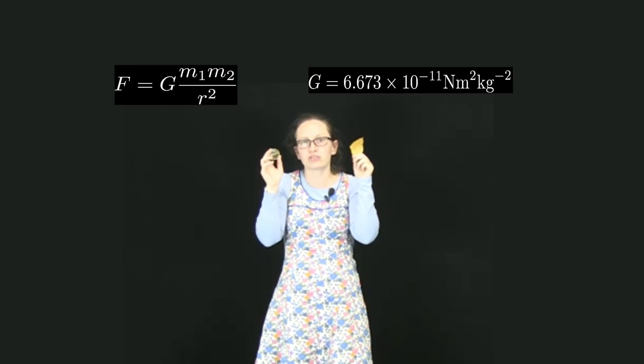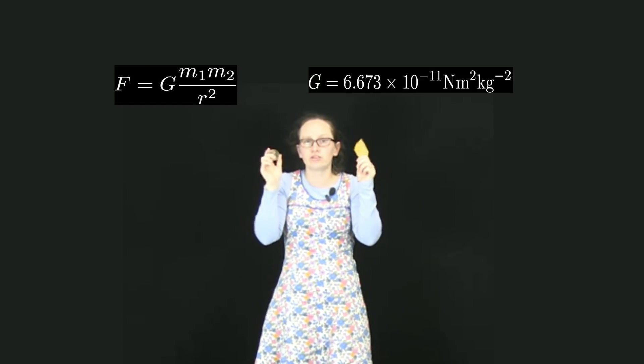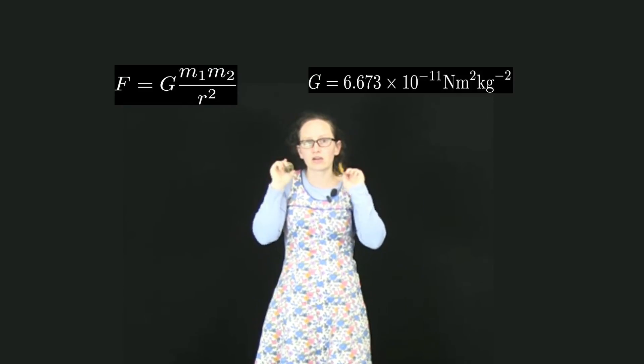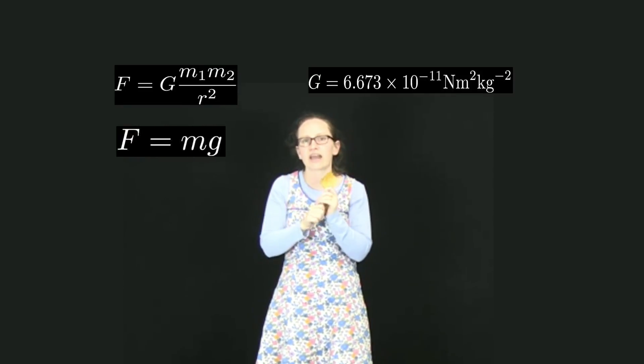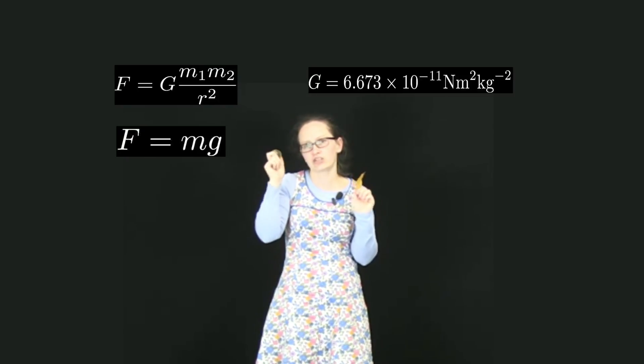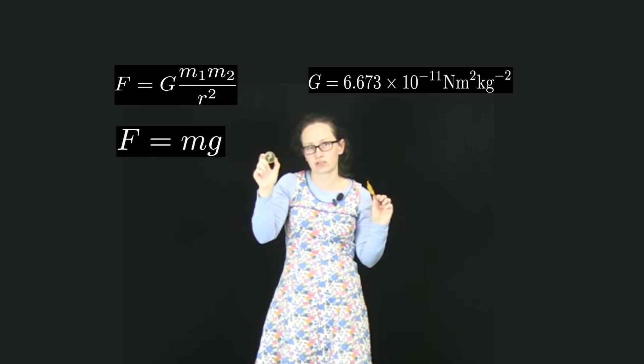Let's have a look now at how we can use Newton's law of universal gravitation, along with our first simple equation, F is equal to mg, to calculate the acceleration of objects on the surface of the Earth.